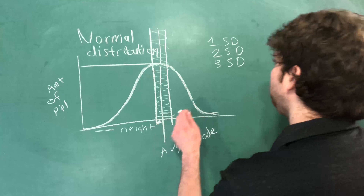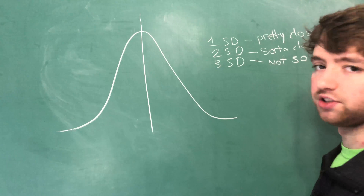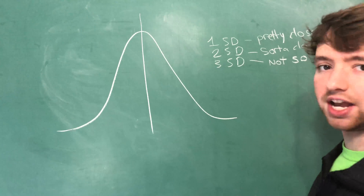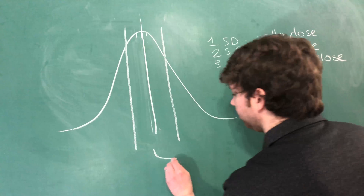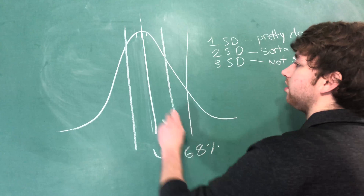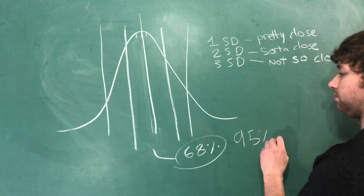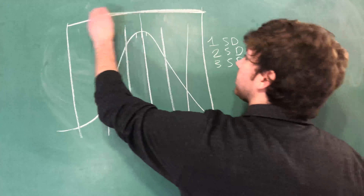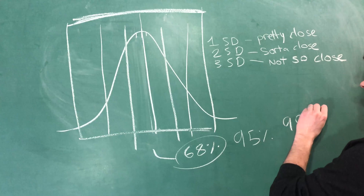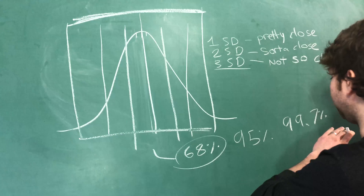Now, if we wanted to classify how many people are in a particular area, there are some standards. Generally, within the first standard deviation, this is going to include 68% of the people. Within the second standard deviation, that includes those 68% plus more, so it's actually 95% of the people. All the way up to the third standard deviation — that's going to be 99.7% of the people.